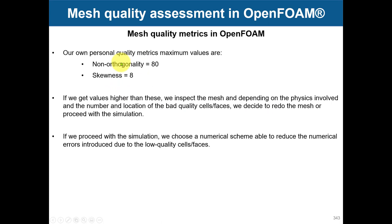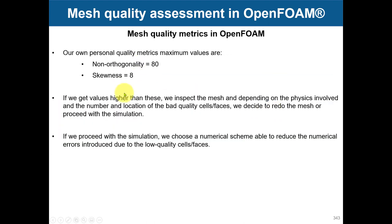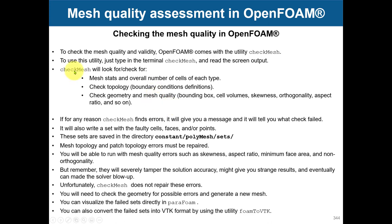Our personal quality metrics: maximum non-orthogonality of 80 and skewness of 0.8. We can go higher since we know how to control the numerics, but it is always recommended to redo the mesh if you have large values to improve them. To check mesh quality in OpenFOAM, use the utility checkMesh. Something very important: if your mesh doesn't pass a check, checkMesh will save the faulty sets in the constant/polyMesh/sets directory so you can visualize that information.